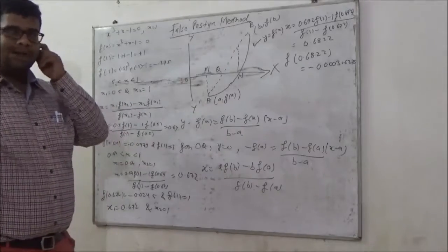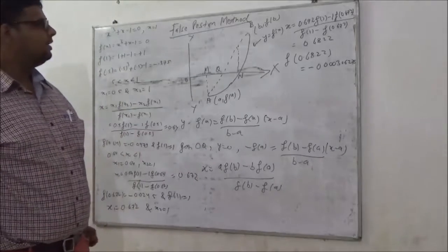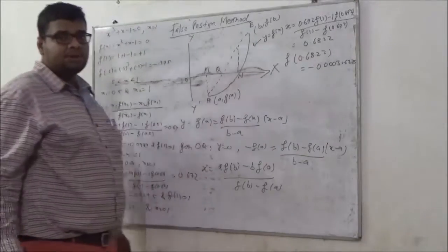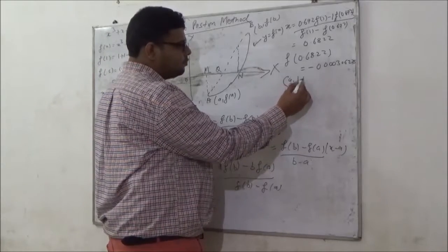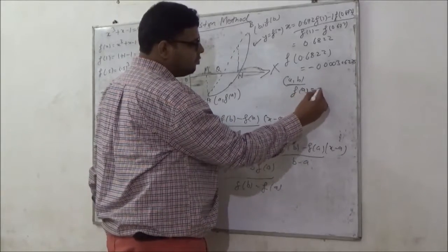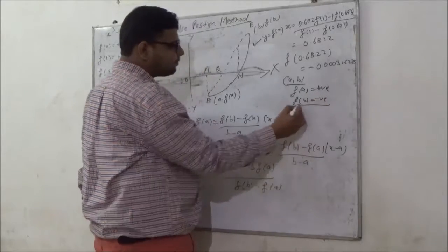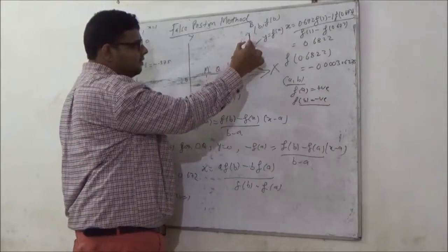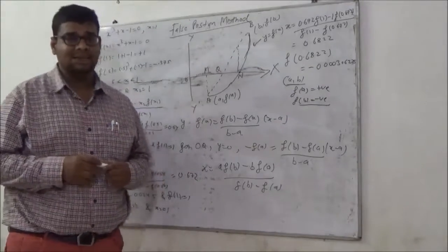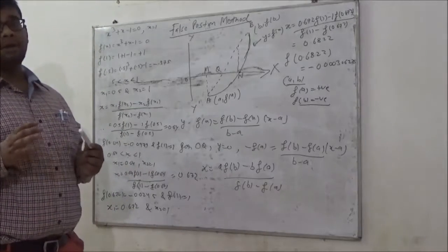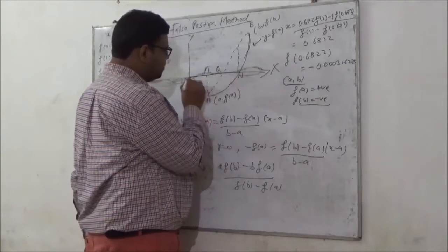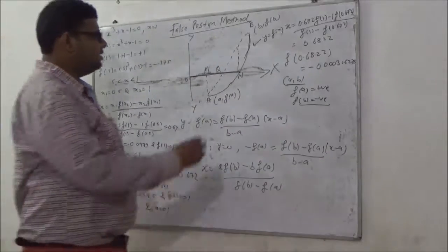To find the approximate root of any function, let us consider y equal to f(x). The function varies over the interval a to b, where the root lies between a and b. f(a) should be positive and f(b) should be negative. The curve intersects the x-axis at point N, and that intersection is called the root or solution. So ON is my real root because the curve intersects at point N.